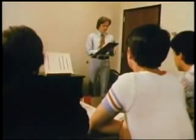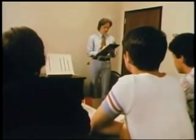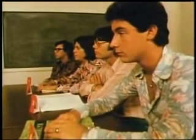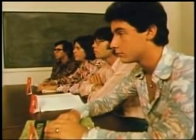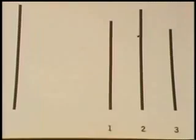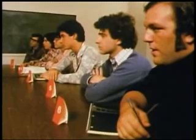Asch found subjects went along with the group on 37% of the critical trials, but through interviews he found they went along for different reasons. One subject says, 'They must be right — there are four of them and one of me.' This subject's yielding is based on a distortion of his judgment; he genuinely believes that the group is correct.